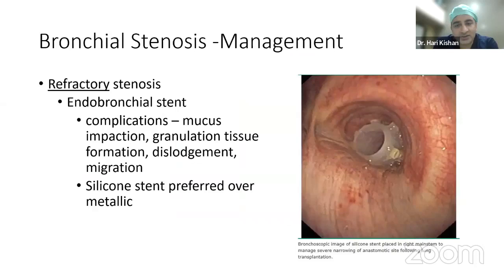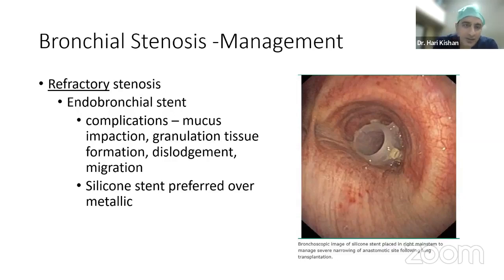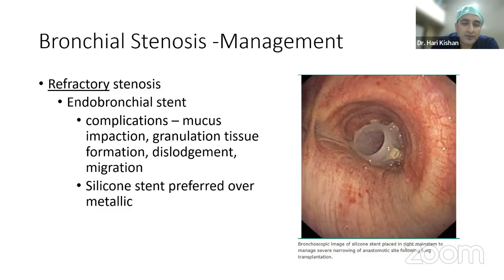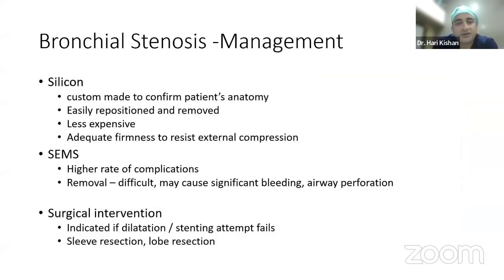For refractory stenosis failing balloon dilatation, a silicone stent is most preferred. However, in lung transplant patients, rigid bronchoscopy often cannot pass beyond the anastomotic stenosis, so a bridge procedure using a covered metal stent is performed first. Once dilatation occurs and space allows rigid bronchoscopy, the metal stent is replaced with a silicone stent. When placing metal stents, surveillance bronchoscopy is essential and they should be removed as quickly as possible to avoid granulation and complications.